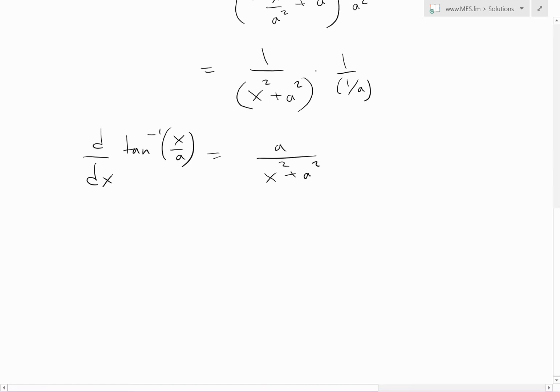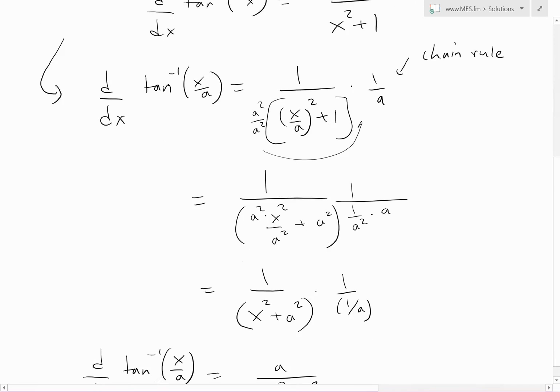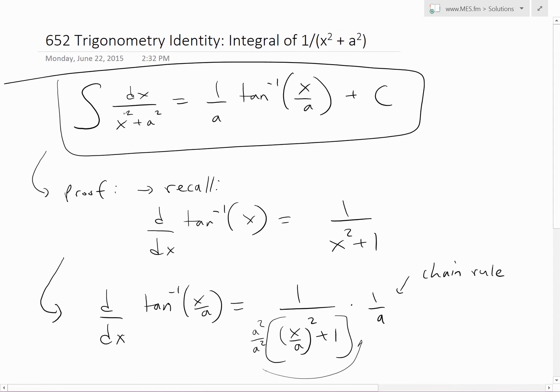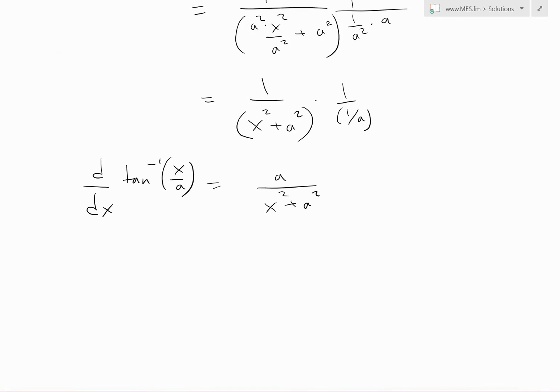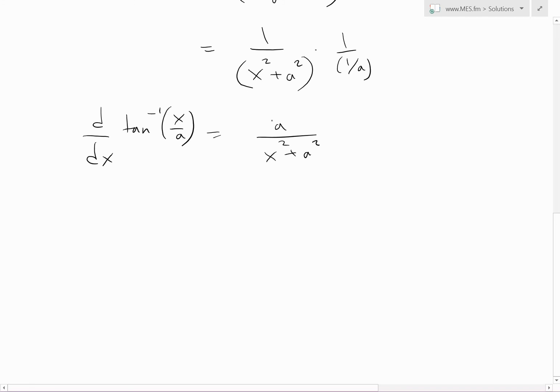Now all we have to do is move this a to the left side so the right side equals exactly what we're trying to integrate: 1 over x squared plus a squared.